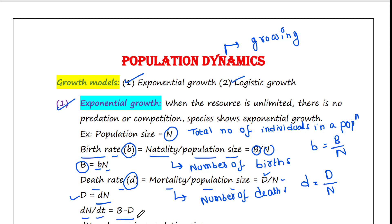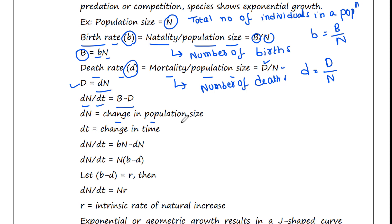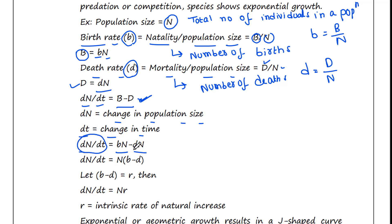dN by dt equals B minus D, because dN is the change in population size. We can calculate the change in population size using natality minus mortality, and dT is the change in time. So dN/dt equals B minus D. We have calculated capital B equals bN and capital D equals dN. Therefore dN/dt equals bN minus dN. Taking N common: dN/dt equals N times (b minus d).